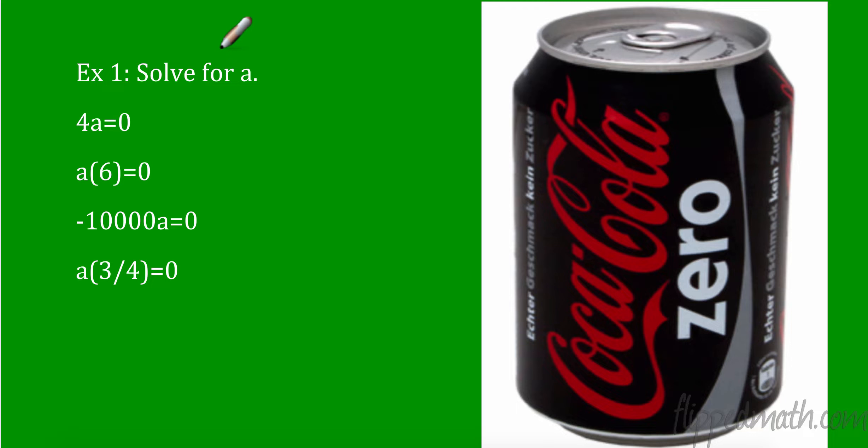First of all we're going to start with probably the easiest ones you've ever done in algebra 2. We're going to solve a couple of these equations. 4 times a equals 0. So if I divide by 4, a would equal 0. In other words when I have two things I'm multiplying here and I know one of them, the other if it equals 0 it has to be 0. What times 6 equals 0? Again a has to equal 0.